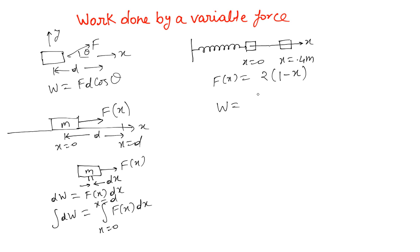So work done is going to be the integration of x equals 0 to x equals 0.4, F is 2(1 minus x) dx. If you do a small integration, you will see this turns out to be 2x with the limits 0.4, and the other part gives you minus x squared over 2 evaluated at 0.4. That gives you 0.8 minus 0.16, and this is nothing but 0.64 joules. This is how you find the work done by a force which is variable.